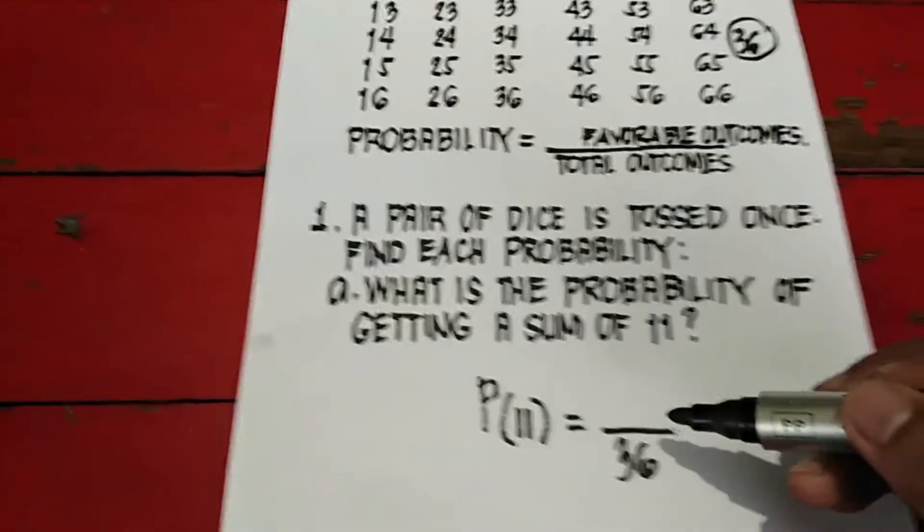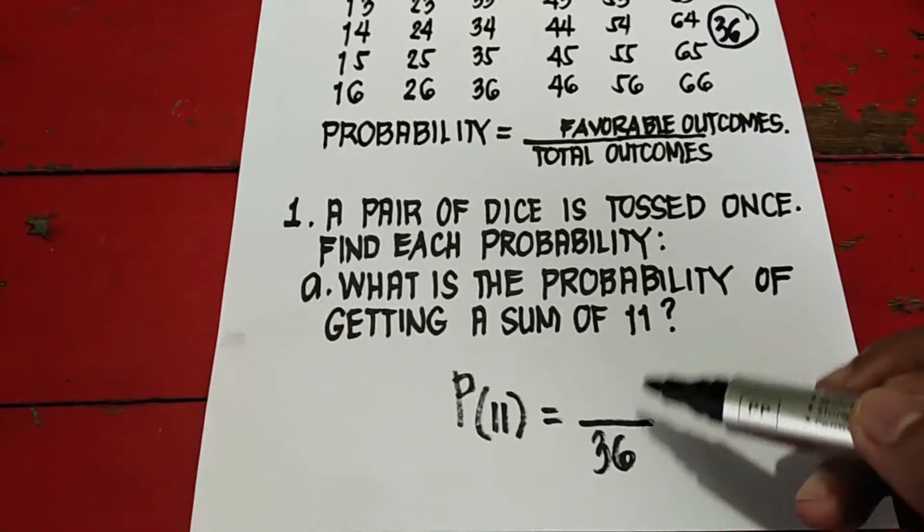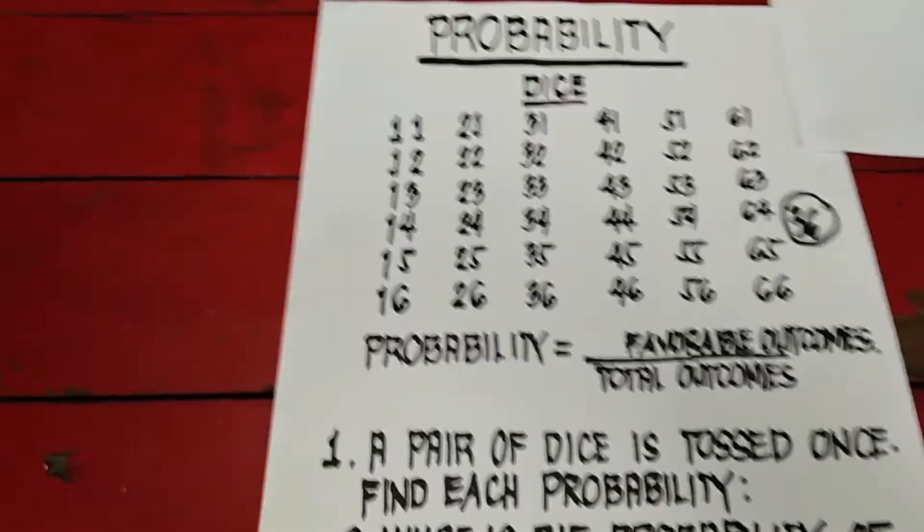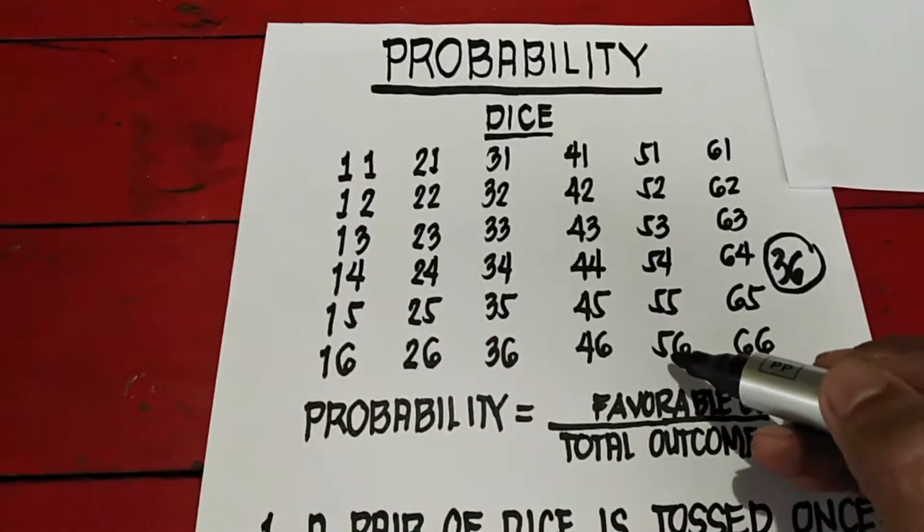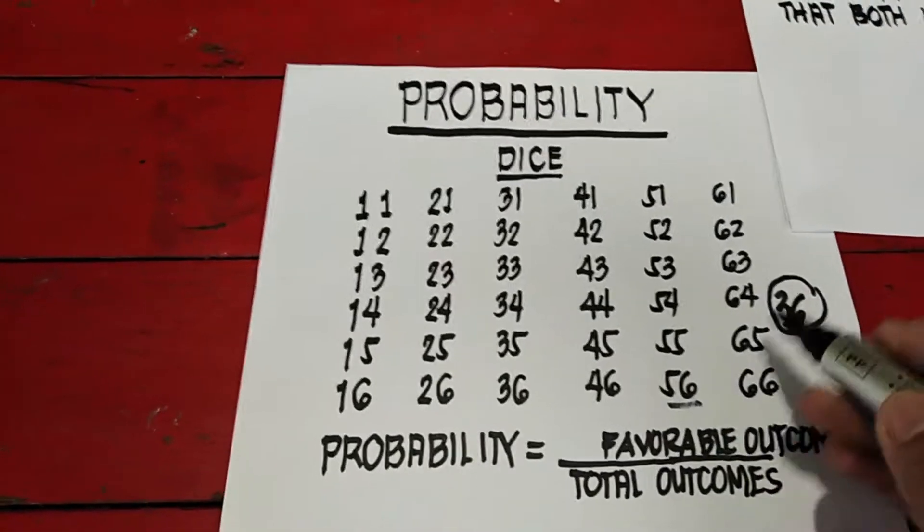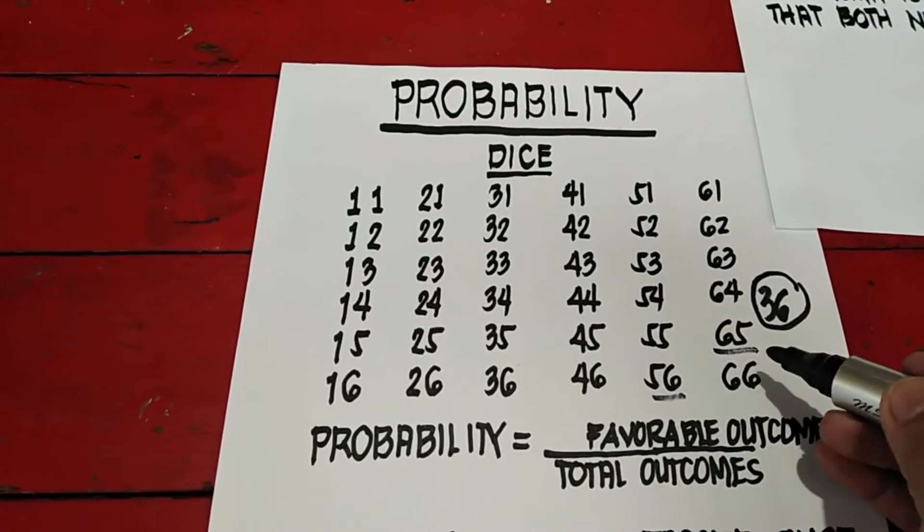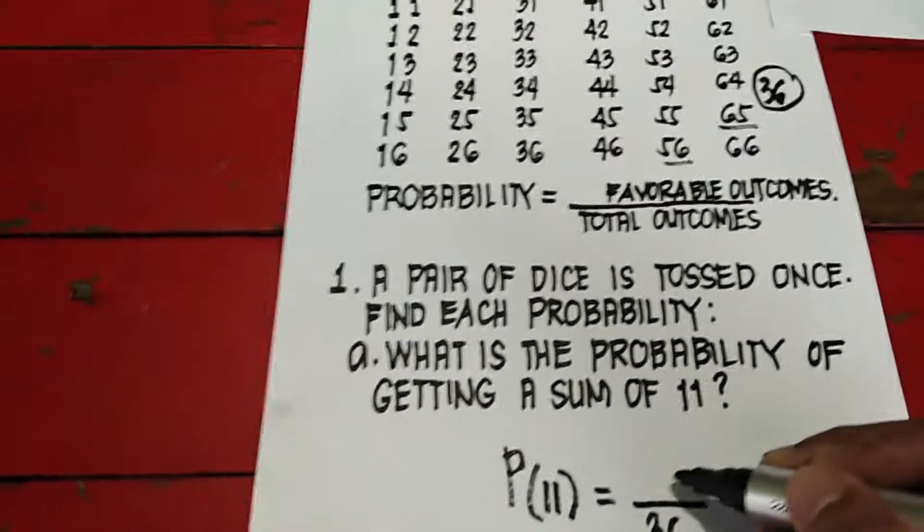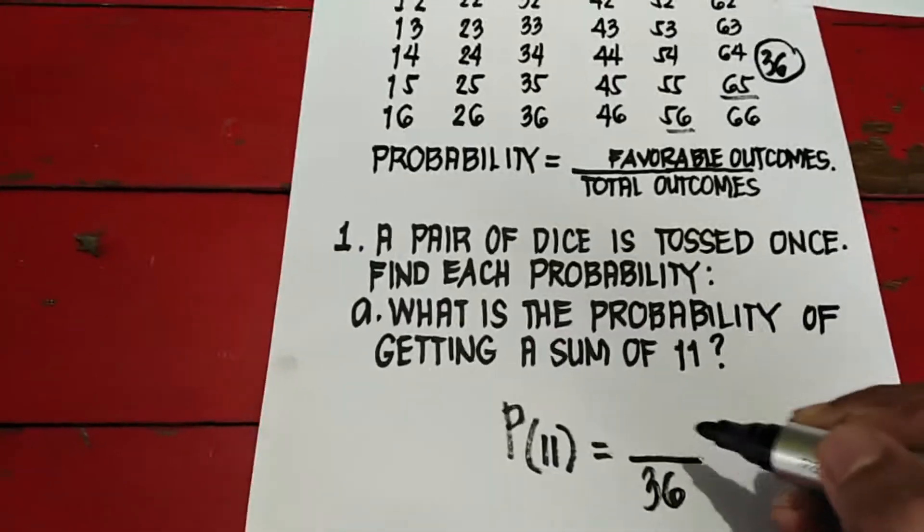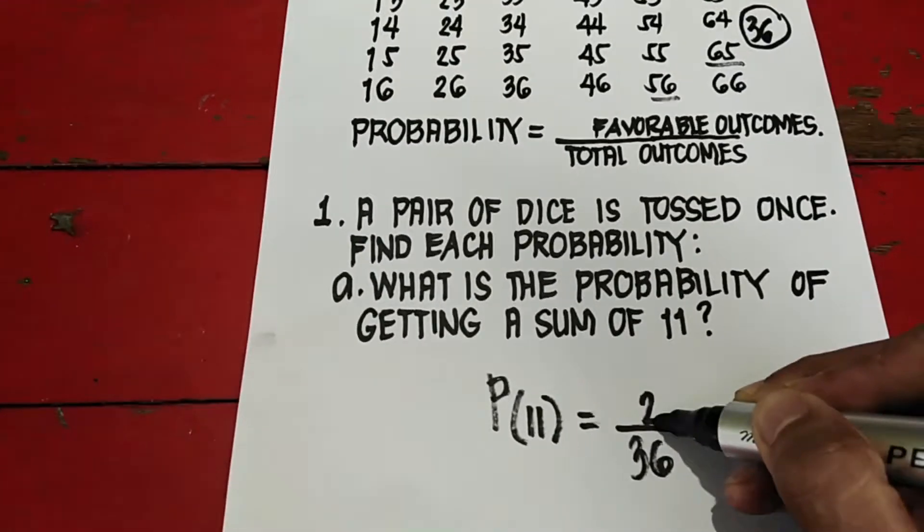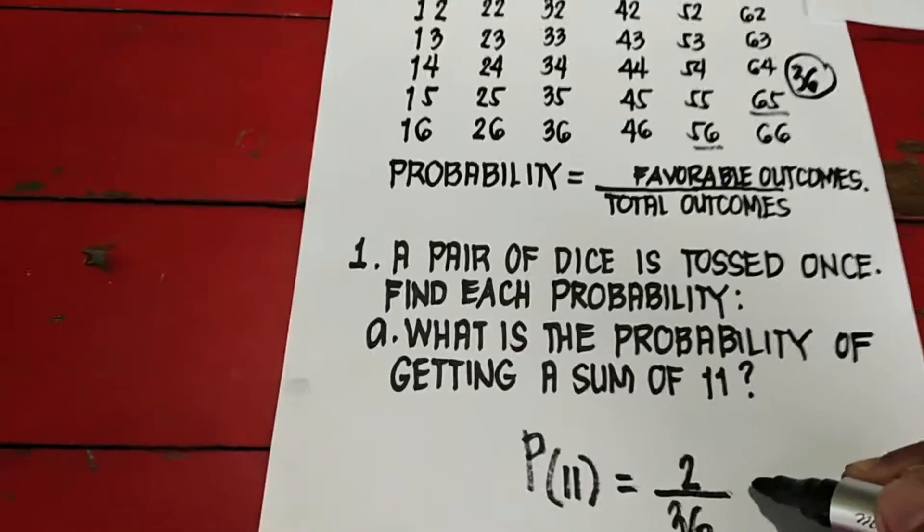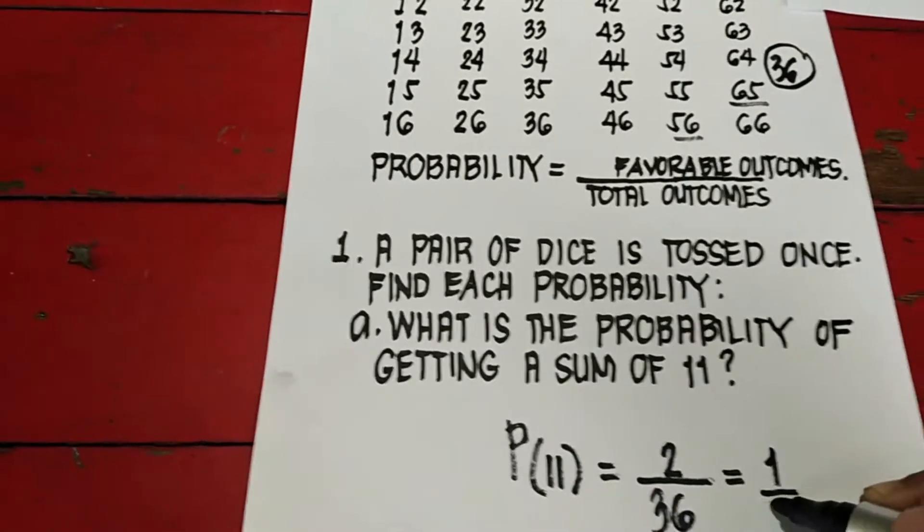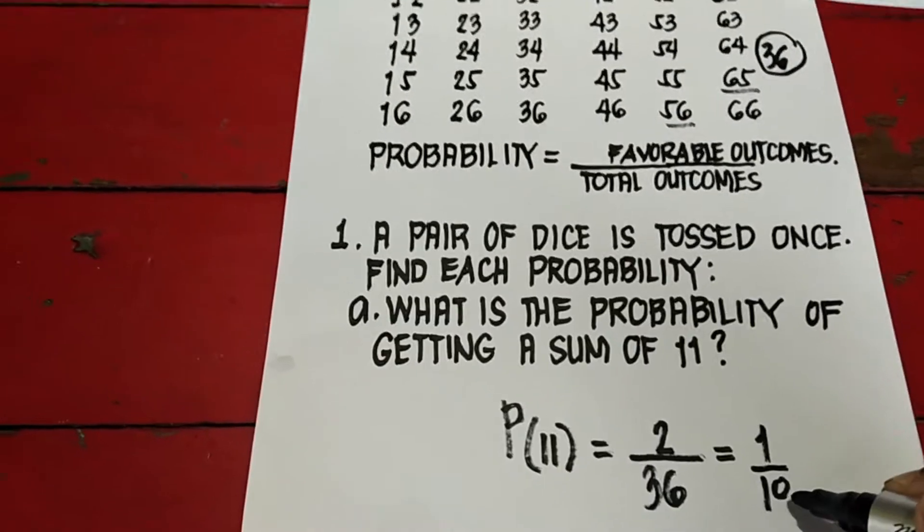Sa taas, hahanapin natin yung sum na 11. Yan yung favorable outcomes. Sa hanap tayo, yung sumang 11. Kung pinag-plus mo 11, ito saka ito. Dalawa lang. So ilan yung possible outcomes natin? Is 2. And lowest term, divided by 2, divided by 2. That is 1 over 18.